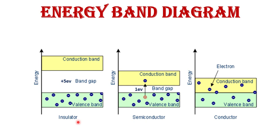Now I will explain insulator with the help of an energy band diagram. As already stated, an insulator is a material in which current does not flow easily — just like wood, paper, plastic, and oil. The reason current does not flow easily is the wide band gap, also called the forbidden energy gap, between the valence band and the conduction band. Valence electrons that want to move from the valence band to the conduction band for conduction require a large amount of energy.